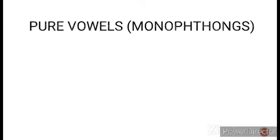So, pure vowels or monophthongs — there are 12 pure vowels and they are also called monophthongs. 'Mono' means single, so there is only one sound segment. That is why it is called 'mono.' I'll give you the phonetic symbols and how each one is pronounced in English.